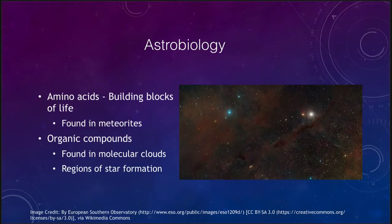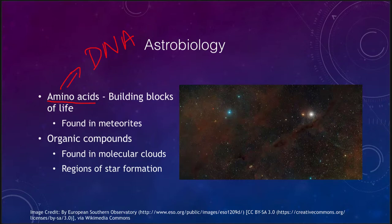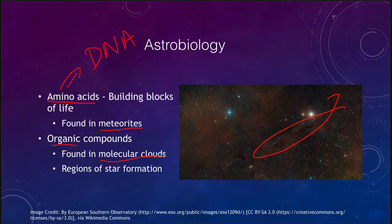Let's look at what we mean by astrobiology. One of the things we talk about are amino acids — the building blocks of life. They make up our DNA, which is inside each of our cells and tells everything about a living creature. Amino acids are very common; they are found in meteorites, and other organic compounds are found in molecular clouds — dark regions where we can actually detect the emissions of organic compounds. So we know that organic compounds form very easily in regions of star formation, leaving the possibility that they could become parts of newly forming planets.